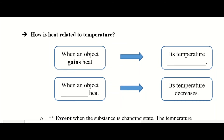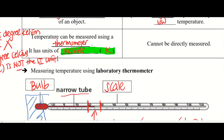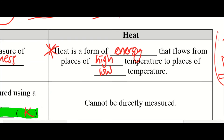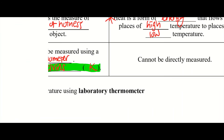So we learned about heat and we learned about temperature. But how is heat exactly related to temperature? First thing: we learned just now that heat always flows from regions or places of high temperature to low temperature. That's one way they are related to each other — the way that heat will move or flow depends on the temperature itself.